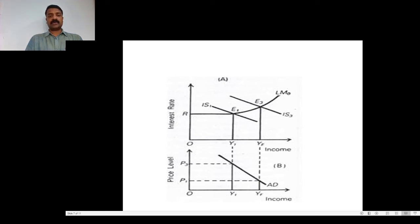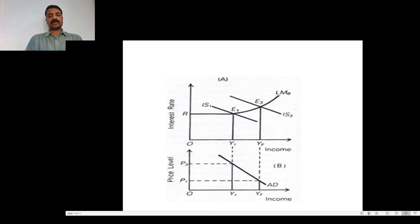Only because of the general price level being reduced does consumption expenditure increase, which creates aggregate demand. In order to meet the increased aggregate demand, producers decide to increase their output level, which generates further employment opportunity.